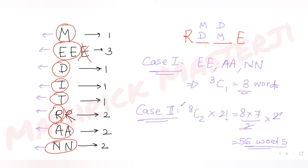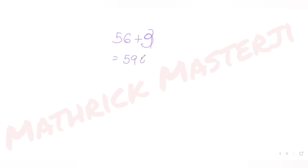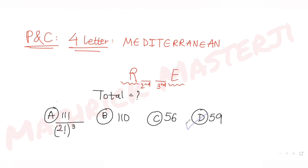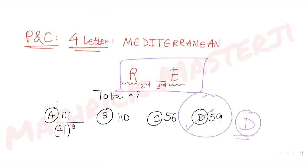So the total number of four-letter words where R is the first letter and E is the last letter is 56 plus 3, which equals 59. Looking at the answer choices, 59 corresponds to option D, which is the correct answer. I hope you've understood how to solve this question by filling the second and third letters from the letters of MEDITERRANEAN.